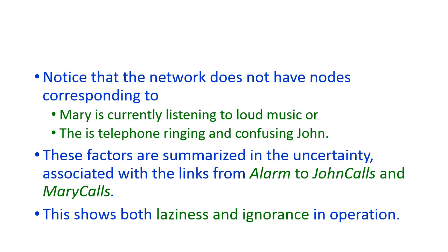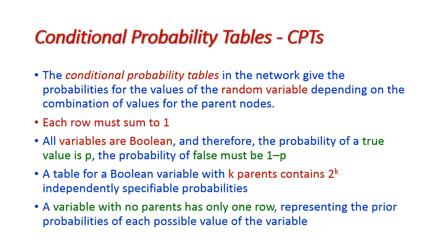The factors like Mary listening to loud music or the telephone confusing John are summarized in the uncertainty associated with the links from alarm to John calls and alarm to Mary calls. This shows both laziness and ignorance in the model. The conditional probability table gives probabilities for each variable depending on the combination of values for the parent nodes. Each row must sum to 1, and since all variables are boolean, if P(true) = p then P(false) = 1 − p.